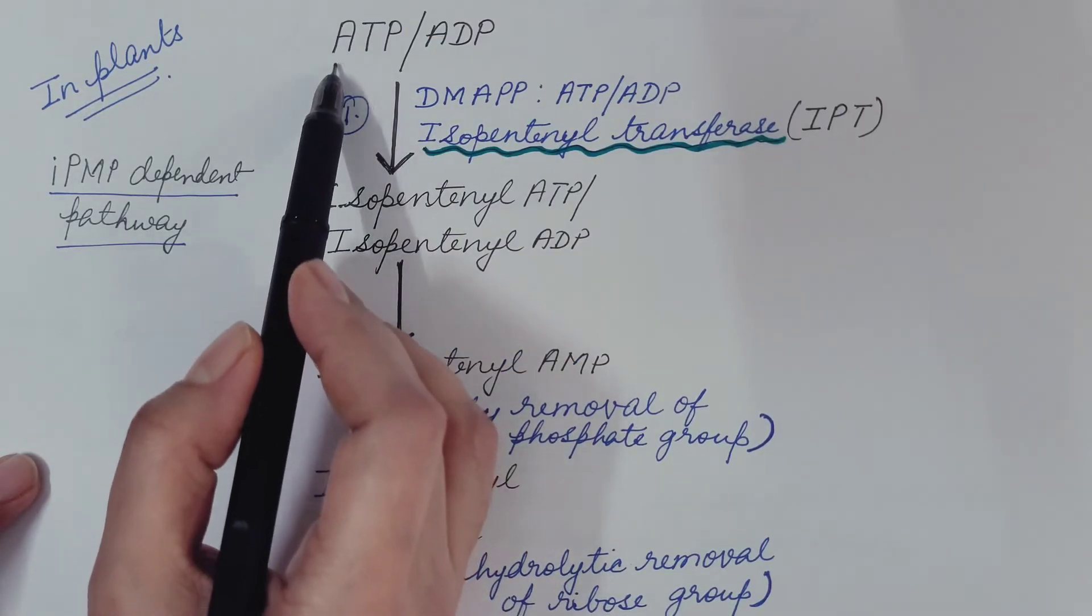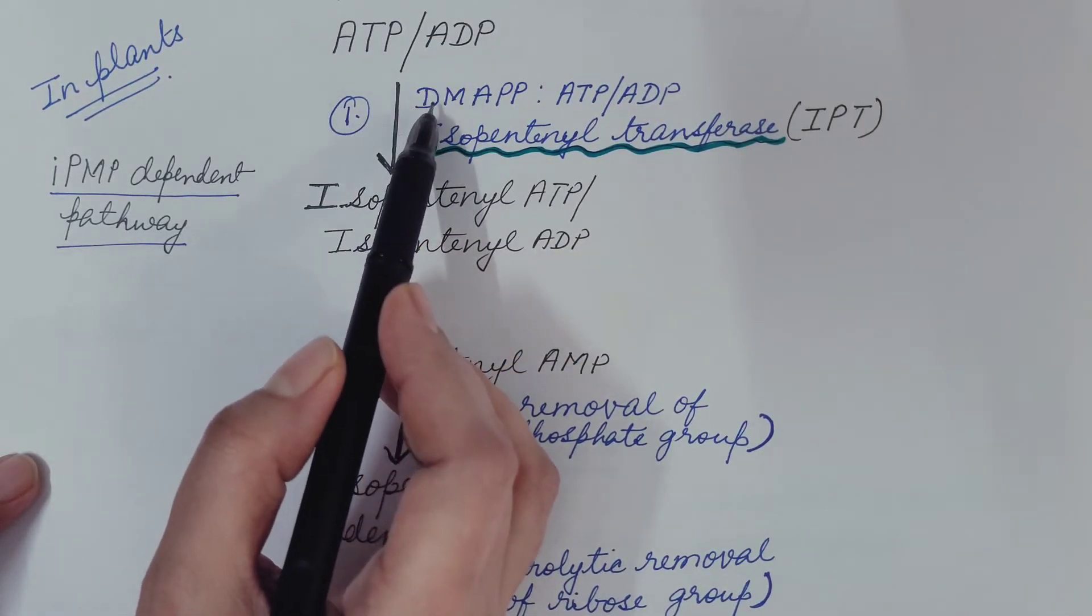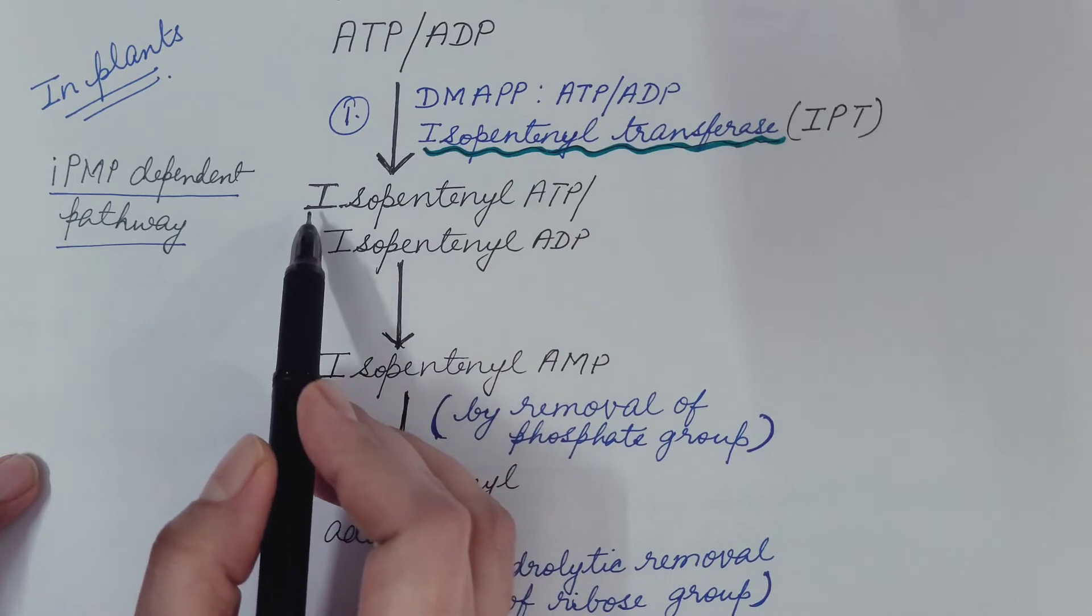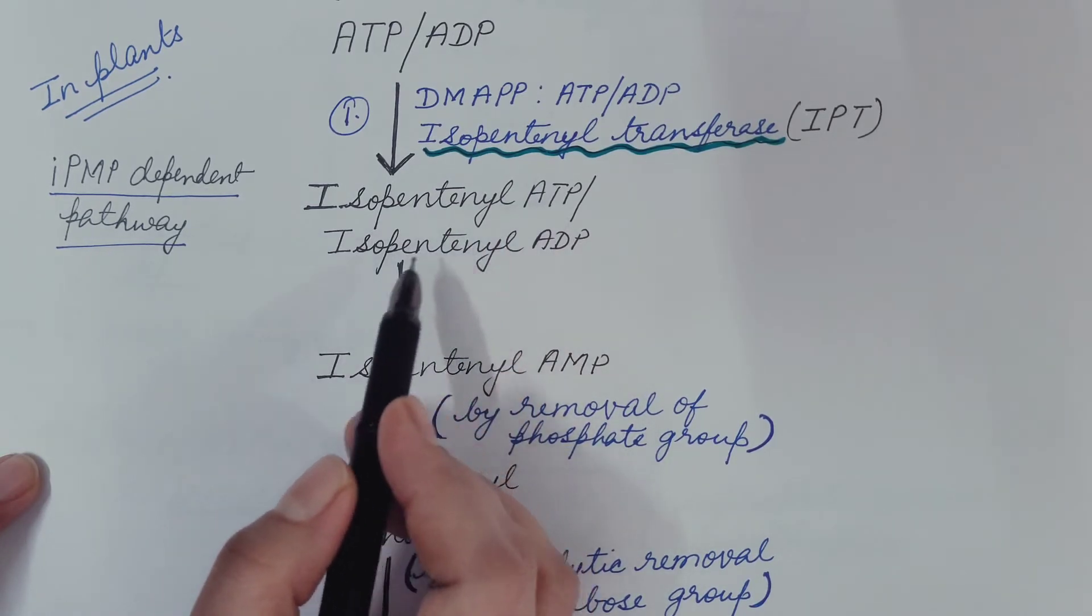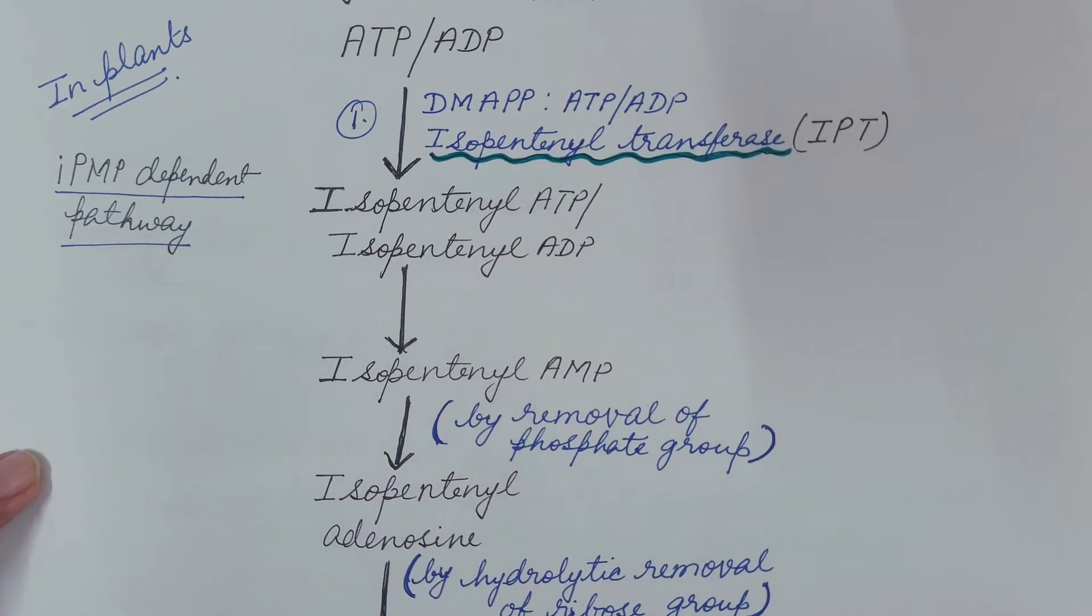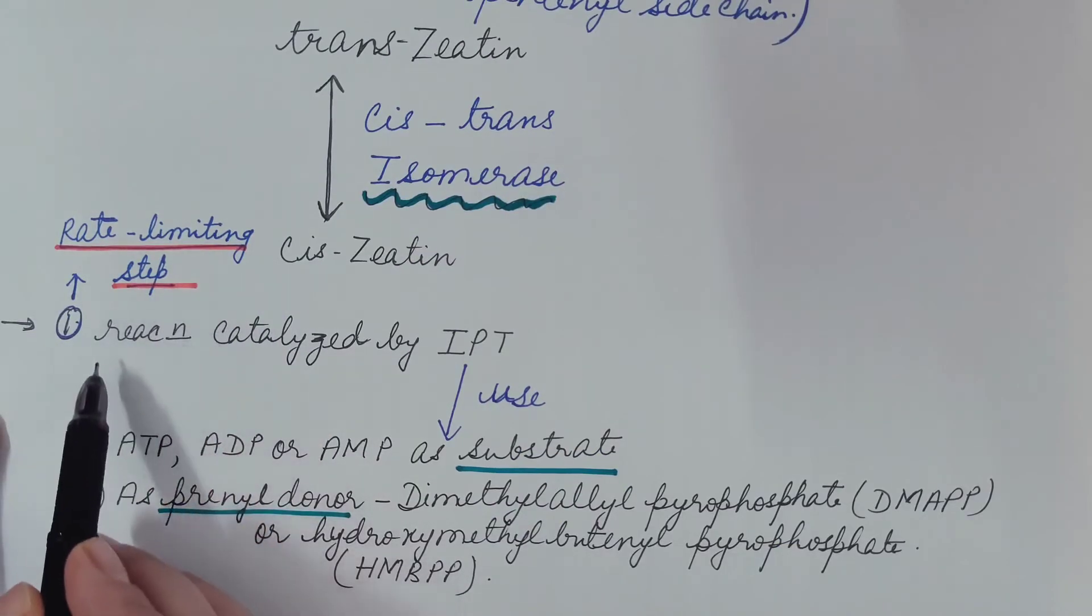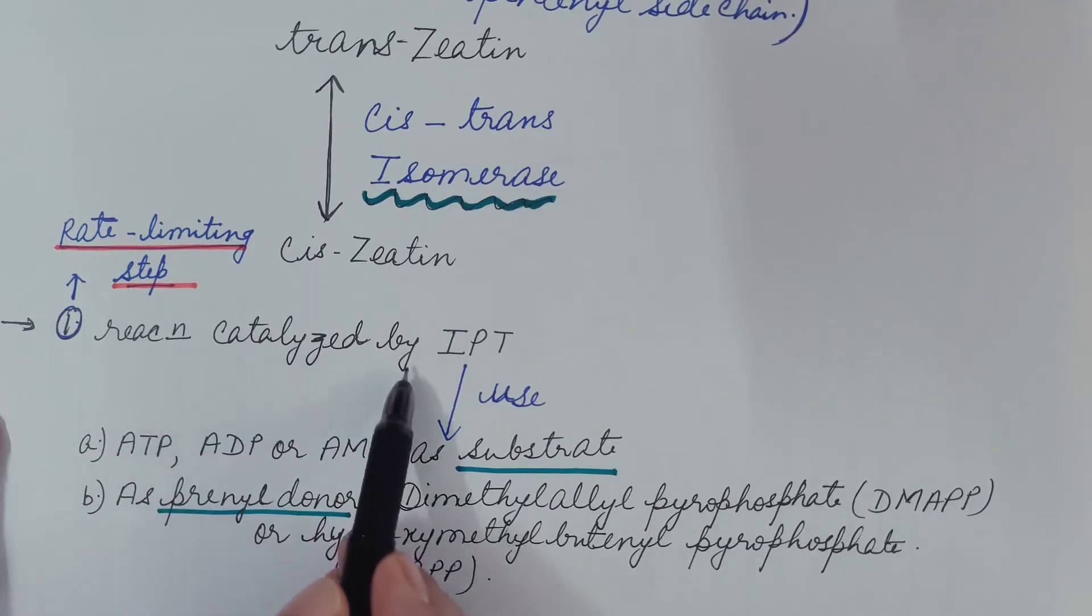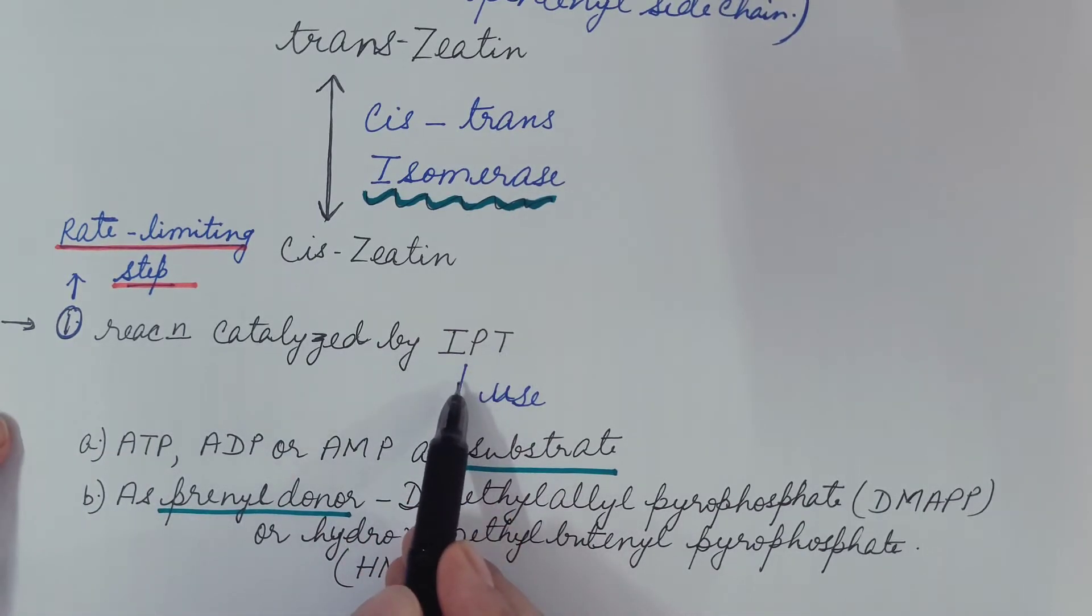Here if we see the first step, ATP or ADP plus DMAPP is converted into isopentanyl ATP or isopentanyl ADP. This first step is the rate limiting step. We have already seen that this step is catalyzed by the enzyme isopentanyl transferase.